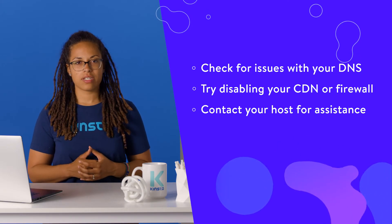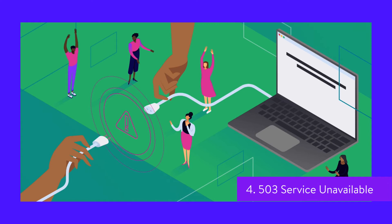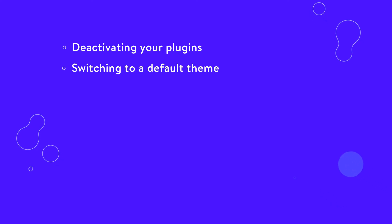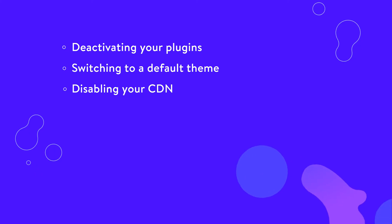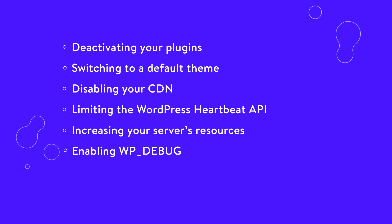When a 503 service unavailable error appears, it means that your server can't be reached. Although your website is up, it won't be accessible to users. This may be due to routine maintenance, high traffic levels, or a more serious problem with your server. The good news is that a 503 error won't influence your search engine rankings, though it can still be highly annoying to visitors. To fix it, you can try deactivating your plugins, switching to a default theme, disabling your CDN, limiting the WordPress heartbeat API, increasing your server's resources, or enabling WP debug. If none of these solutions work, your best course of action is to get in touch with your host's support team.